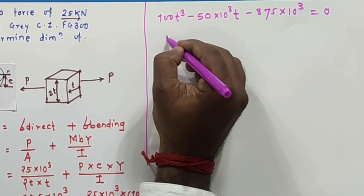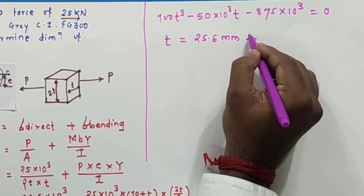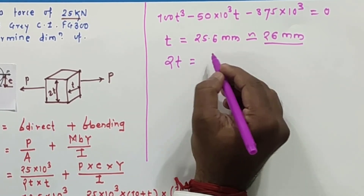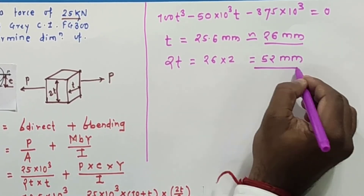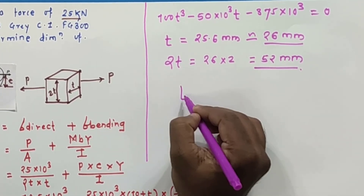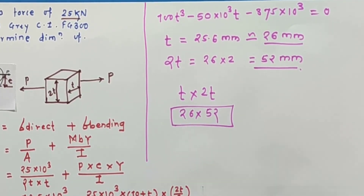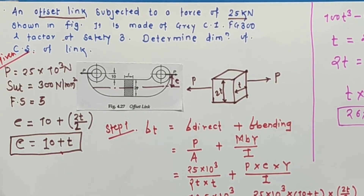Solving this cubic equation, we get the value of thickness T as approximately 25-point-something mm, which we round up to 26 mm. The cross section 2T is 26×2, that is 52 mm. So the final cross section dimensions are T×2T, which is 26 mm by 52 mm. We referred to the simple equation, converted it into cubic form, and calculated the dimensions of the cross section.